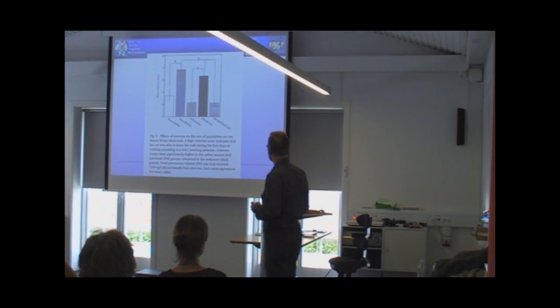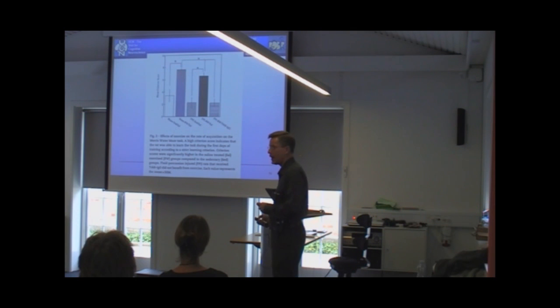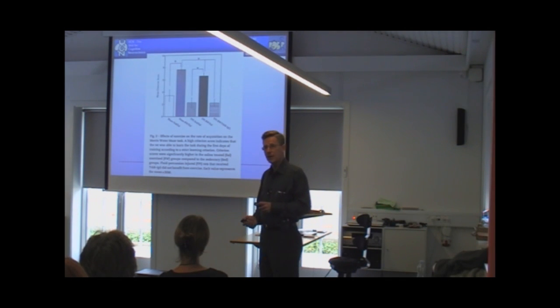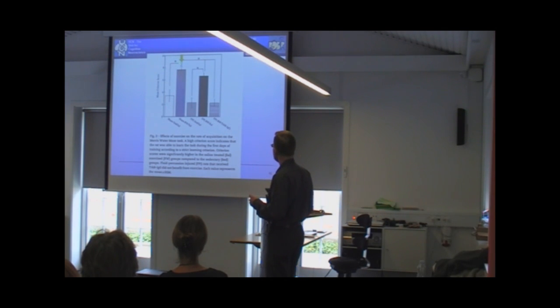You have some animals that are lesioned. And this is a cognitive task, this time a place learning in a water maze. And you have here the shams. These are normal animals, just control operated. So this is the level. This is the criterion score. This is in short a number indicating how well they solve the task. The higher, the better.